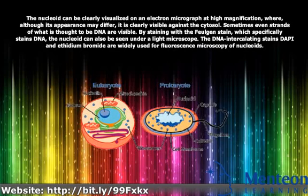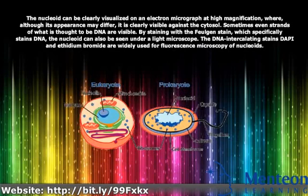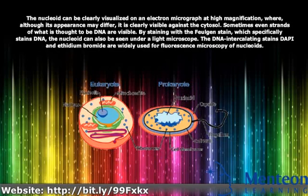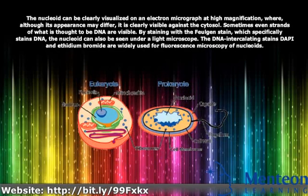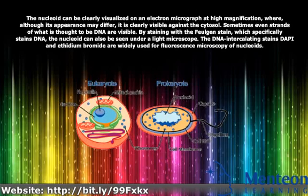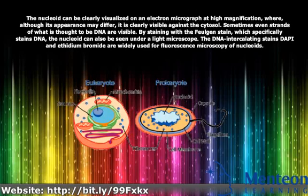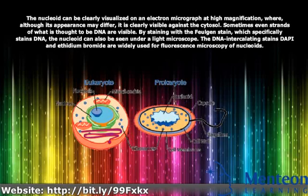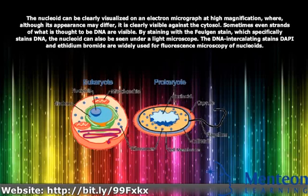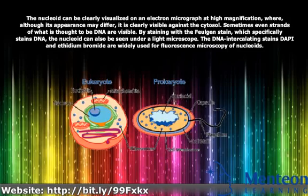Sometimes even strands of what is thought to be DNA are visible by staining with the Feulgen stain, which specifically stains DNA. The Nucleoid can also be seen under a light microscope. The DNA intercalating stains DAPI and ethidium bromide are widely used for fluorescence microscopy of nucleoids.